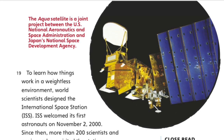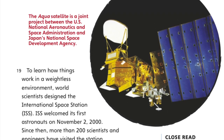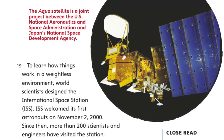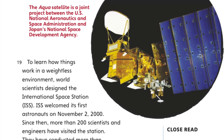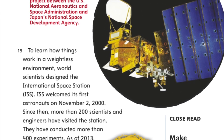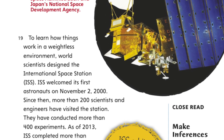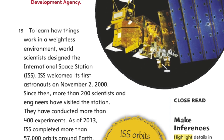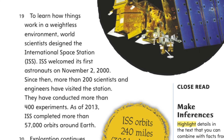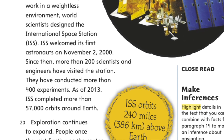To learn how things work in a weightless environment, world scientists designed the International Space Station. The ISS welcomed its first astronauts on November 2, 2000. Since then, more than 200 scientists and engineers have visited the station. They have conducted more than 400 experiments. As of 2013, the ISS completed more than 57,000 orbits around Earth.